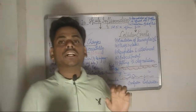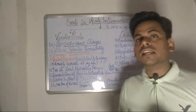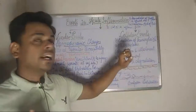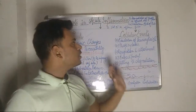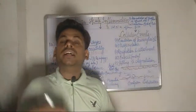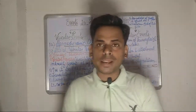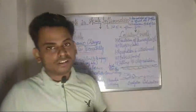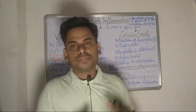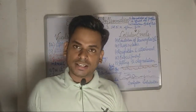So students, this was a short discussion about the hemodynamic changes and vascular events taking place during acute inflammation. In the second part of this video, I will be talking about phagocytosis — recognition and attachment, engulfment, and killing and degradation — as part of the cellular events in acute inflammation. If you have any queries or comments, please comment below. If you are visiting my channel for the first time and haven't subscribed yet, please subscribe and stay tuned for the next part covering cellular events.